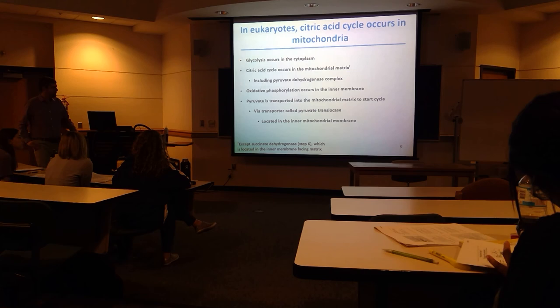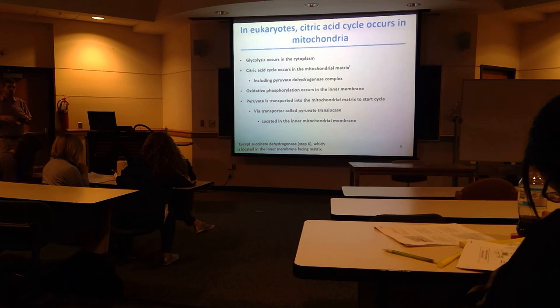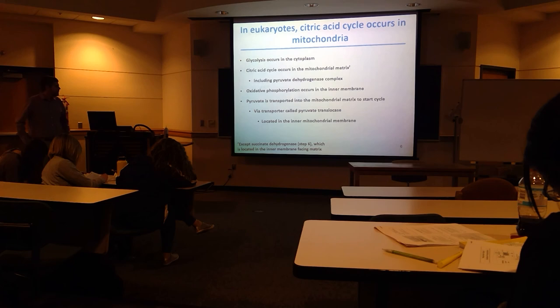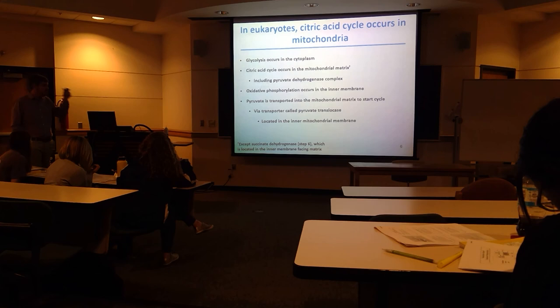One step — succinate dehydrogenase, step six of the citric acid cycle — is embedded in the inner mitochondrial membrane. All other citric acid cycle enzymes float in the matrix. Oxidative phosphorylation also occurs in and around the inner mitochondrial membrane, which is very vital for ATP generation.